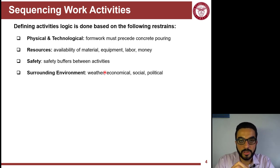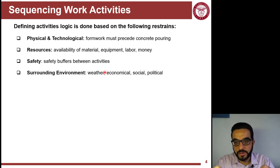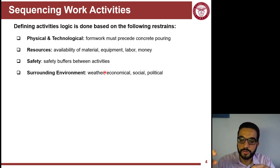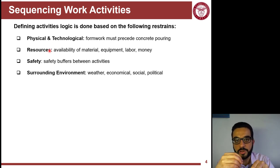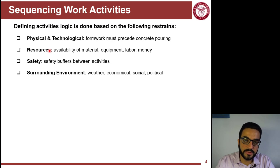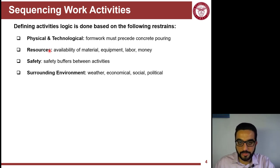The second type of dependency is resources. Things you initially think can be done in parallel may not be. For example, if you have two buildings on pile foundations, they seem independent, but if you only have one drilling rig, you cannot work on both simultaneously. Due to resource reasons, you enforce a logic: do the foundation of the first building, then the second, even though there is no physical or technological relation between them.